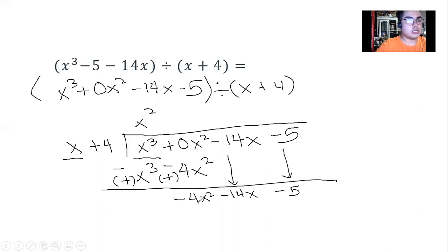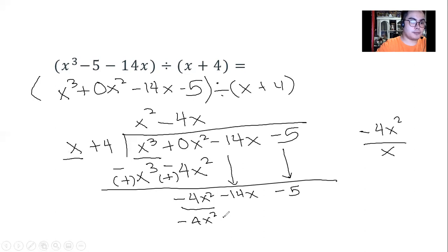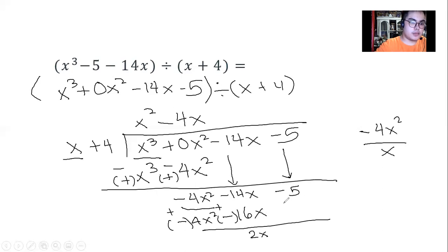We repeat the cycle. Negative 4x squared divided by x gives negative 4x. We multiply: 4x times x is 4x squared, and 4 times negative 4 gives negative 16x. We change the signs again, then simplify, multiply, and bring down — giving us 2x as the next first term, and 2x divided by x equals 2.